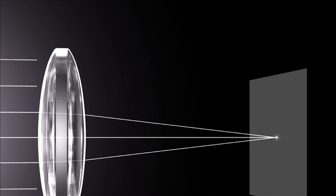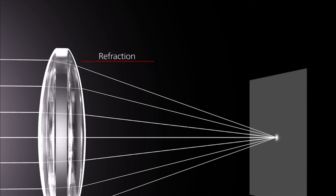When light rays pass through the lens, they do not travel in straight lines, but rather bend slightly inward. This phenomenon is called refraction.